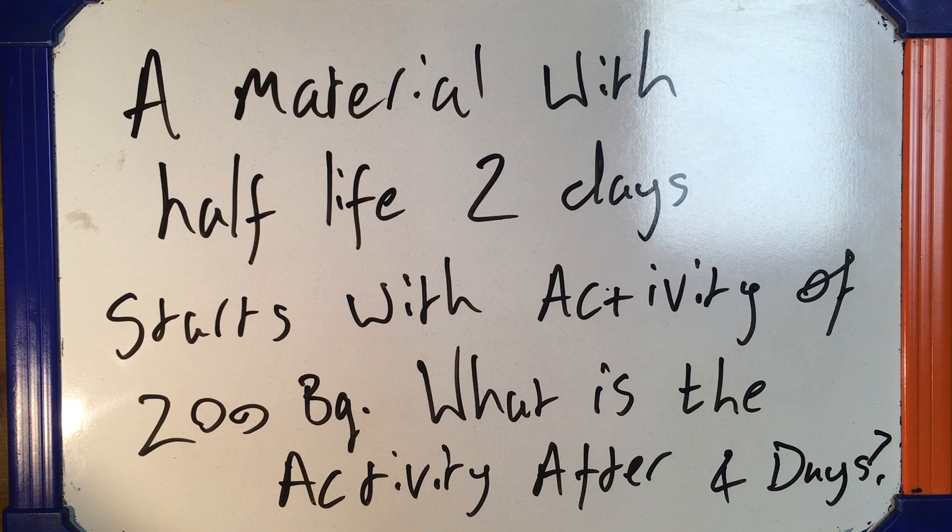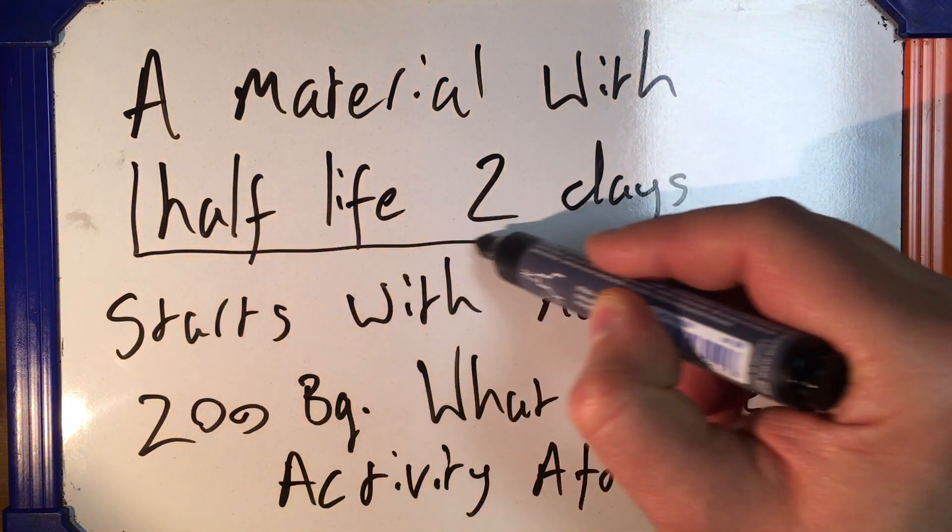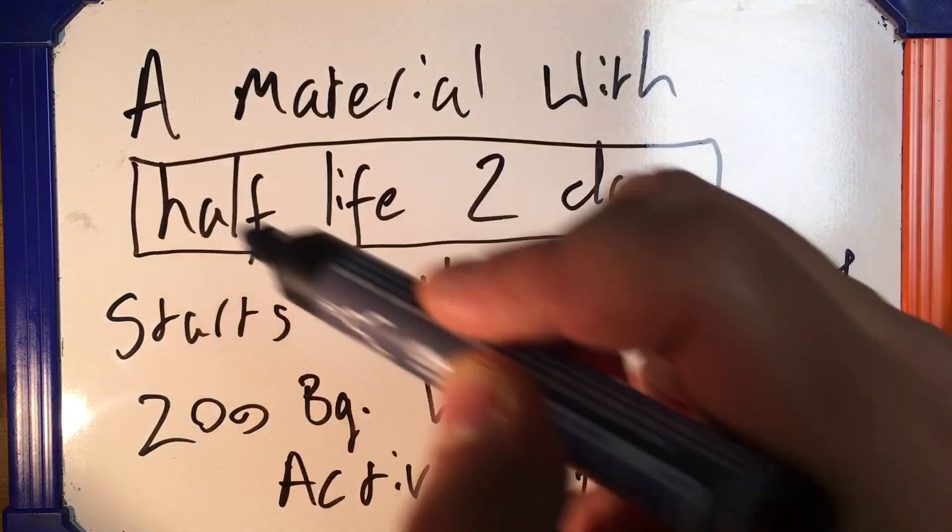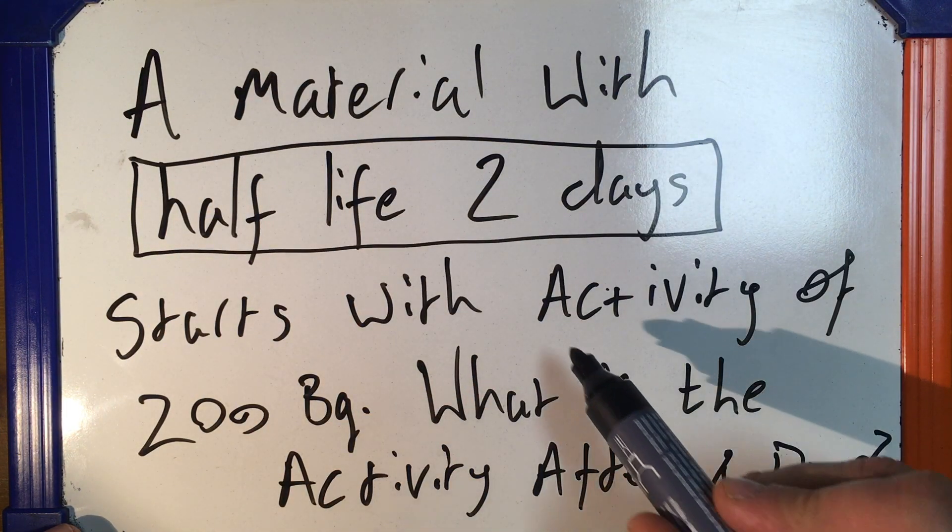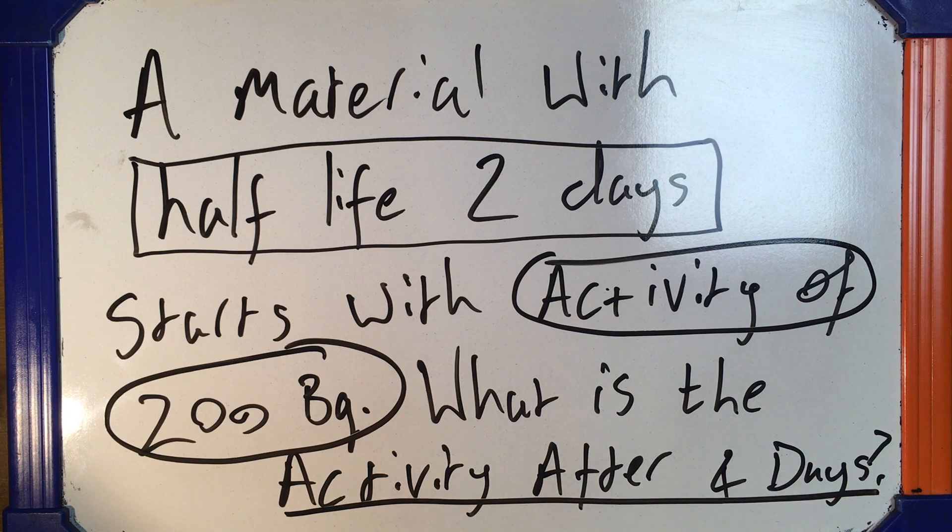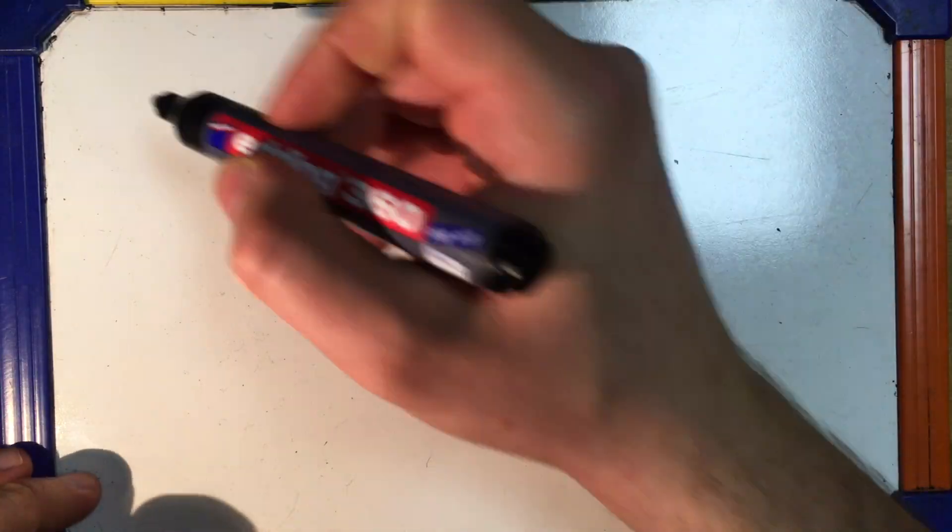Alright, if I was doing this question, the first thing that I would do is highlight the key information. They've told me that we have a half-life of 2 days and an activity of 200 becquerels. They want to know what the activity is after 4 days.